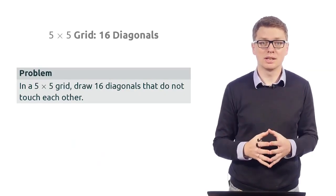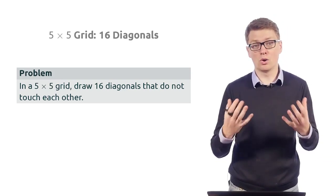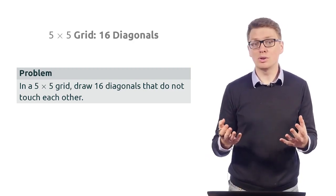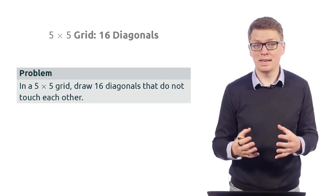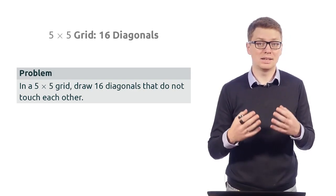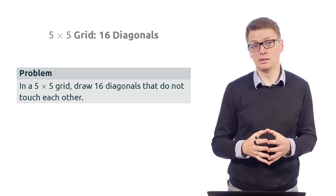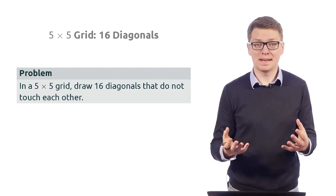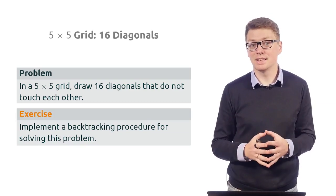And now we come to a challenge. In this case, we are given a five by five grid and our goal is to place 16 diagonals. You may want to first place such 16 diagonals by hand and you will find out that it is not so easy. So instead of trying to do this by hand, you may also want to implement a backtracking procedure. And this is your exercise actually.